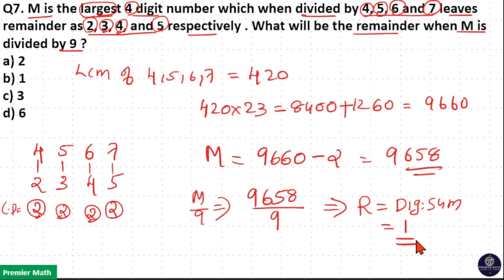28 means 2 plus 8 is 10. So 1 is the digital sum, so the remainder is 1. Remainder is 1 means your answer is option B.